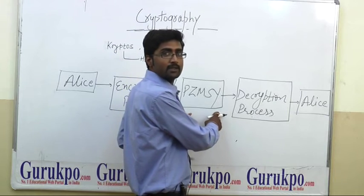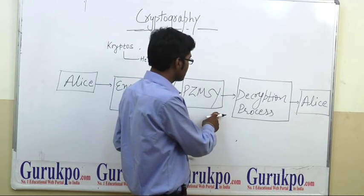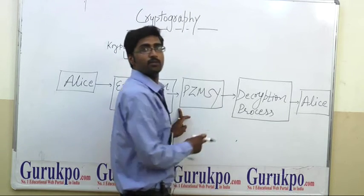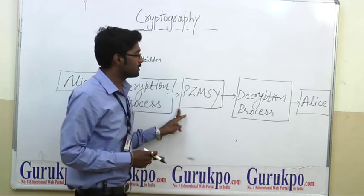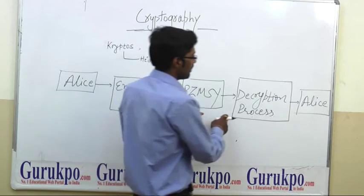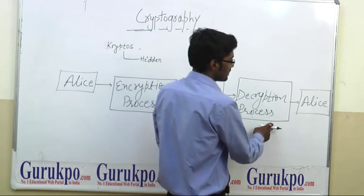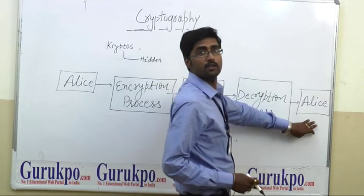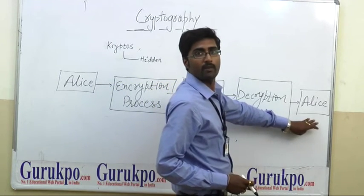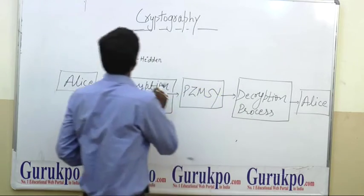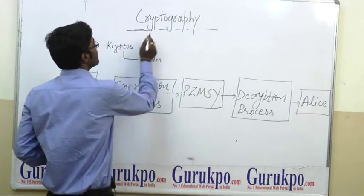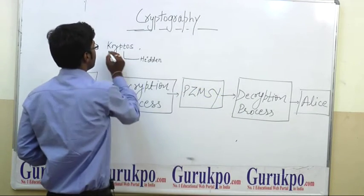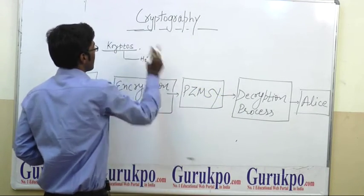Ciphertext means that it is not human readable. Now, after the decryption process, it again generates the original message. So this is the process of encryption in cryptography.